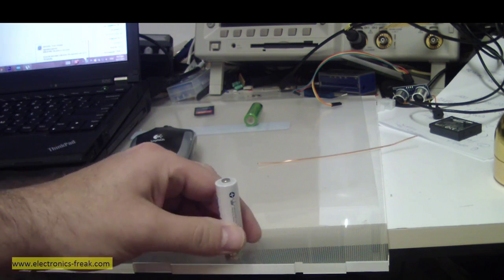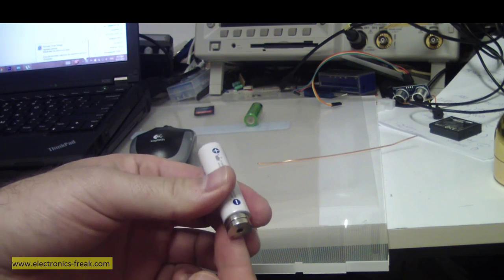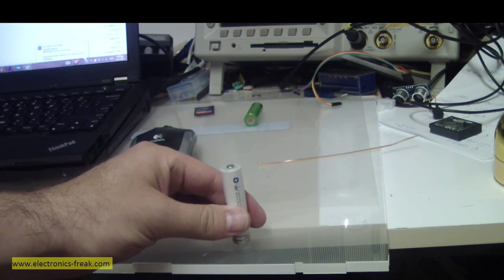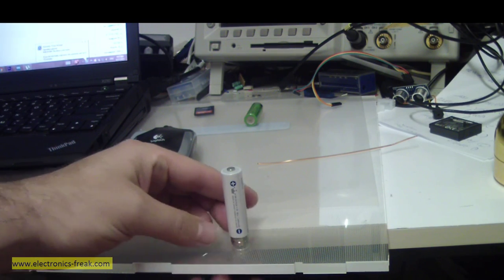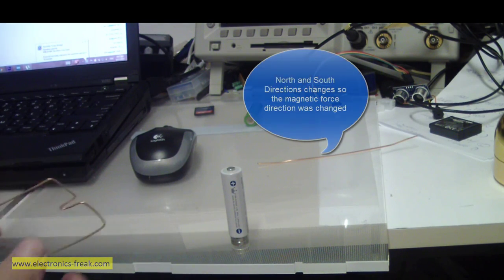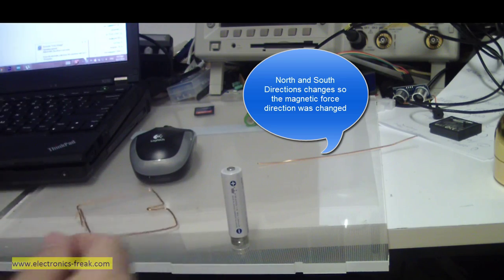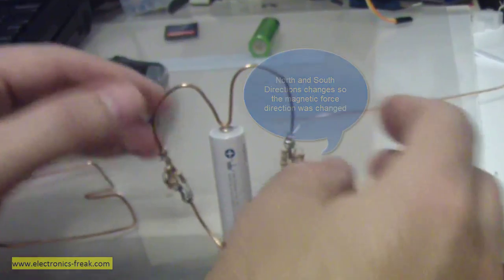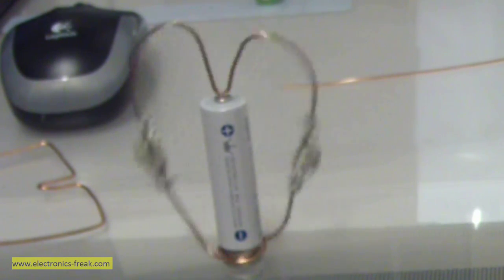All I need to do is to flip the neodymium magnets, so I'm flipping them and now it should spin counterclockwise. As we can see, it is spinning counterclockwise.